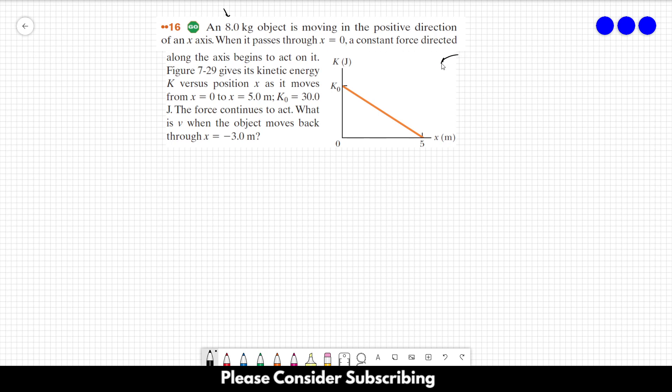This figure gives its kinetic energy versus position x as it moves from x equals 0 to x equals 5 meters. Initial kinetic energy is 30 joules. The force continues to act. What is the speed when the object moves back through x equals minus 3 meters?